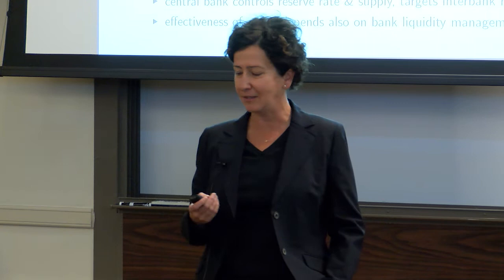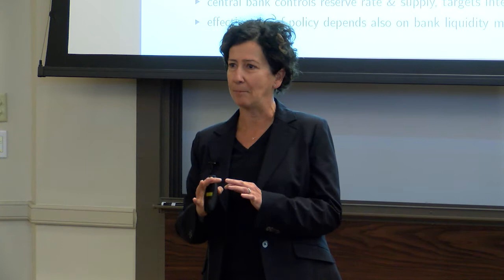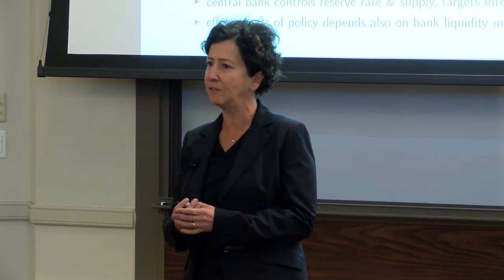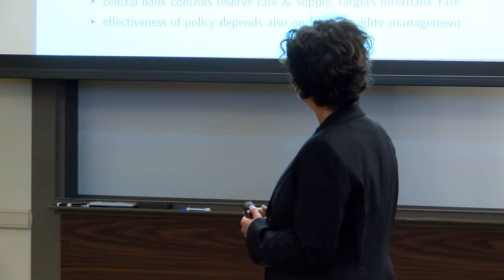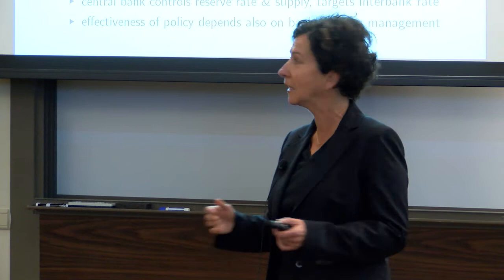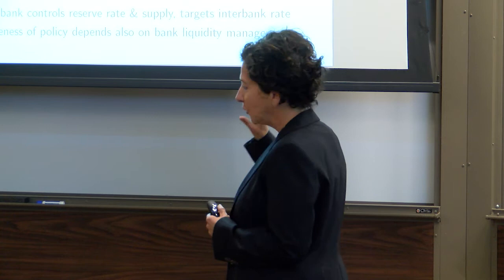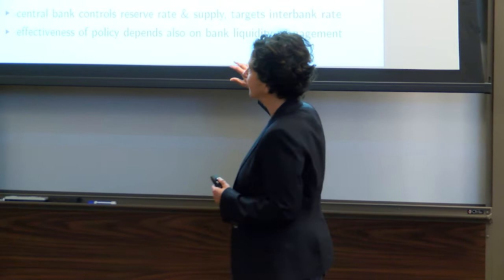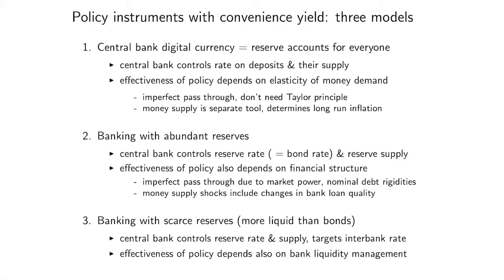You might wonder why you should care about a setup that sounds completely artificial, since this is not the US economy. This is the simplest way to illustrate what happens in a world where the policy rule has a convenience yield. In that first setup the central bank's policy instrument has a convenience yield — that is why we get determinacy without the Taylor principle and why the money supply is a separate tool. Then I'll show that these results carry over to more complicated settings with banks, starting with the current regime where banks have abundant reserves.